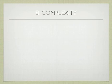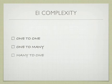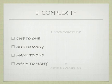Function points are based upon the traditional idea of complexity. One-to-one is simplest, one-to-many is more complex, many-to-one is similar to one-to-many, and then many-to-many is the most complex. That goes from less complex to more complex.